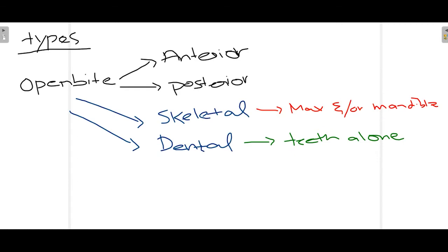There are different types of OpenBite. For simplicity we divide it into two types. Firstly, anterior and posterior OpenBite as discussed. The second way of classifying OpenBite is skeletal or dental. By skeletal OpenBite we mean there is something wrong with either the maxilla, mandible, or both. By dental OpenBite we mean the maxilla and mandible are normal but there is something wrong with how the teeth are in occlusion, leading to OpenBite.